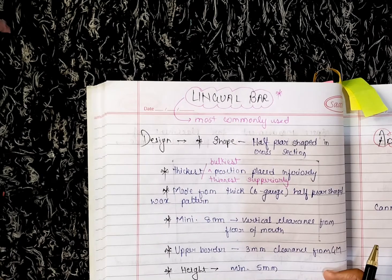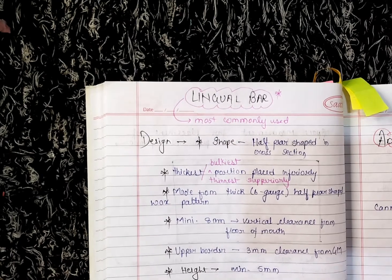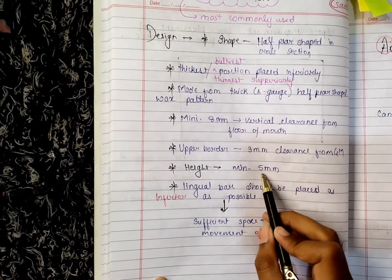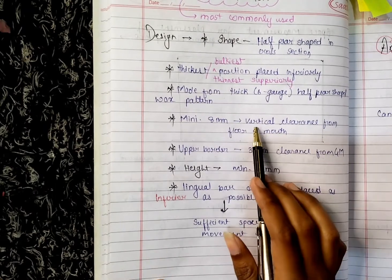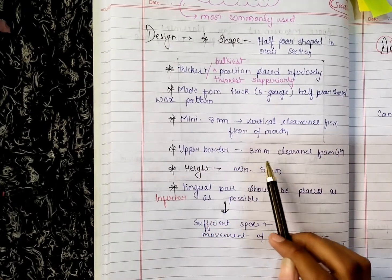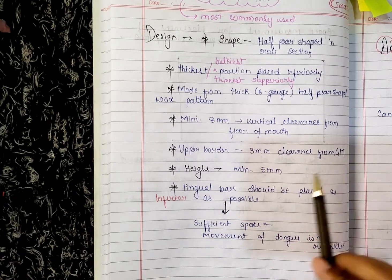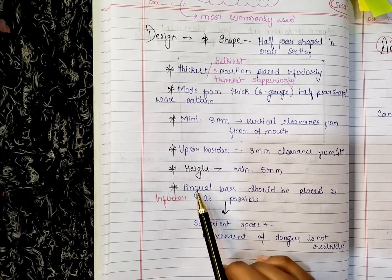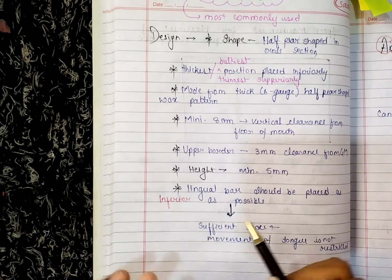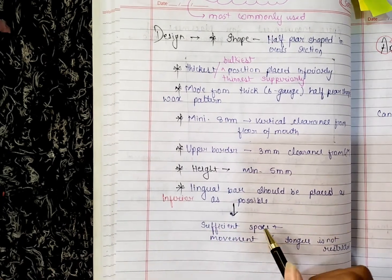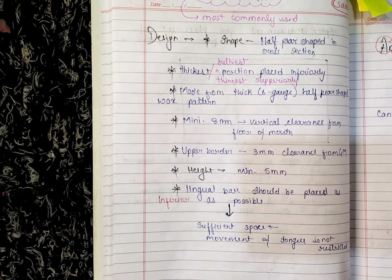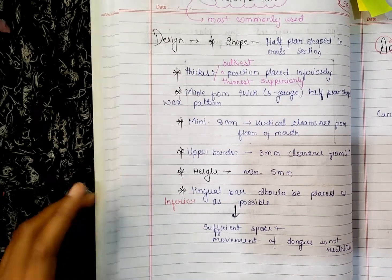The reason for clearance from the gingival margin is that it is highly vascular — the most vascular supply is in the gingival margin — so any harm or damage there can cause a lot of problems for the patient. The height should be minimum five mm. So to remember: vertical clearance eight mm, upper border clearance three mm from gingival margin, height five mm, and the lingual bar should be placed as inferiorly as possible.